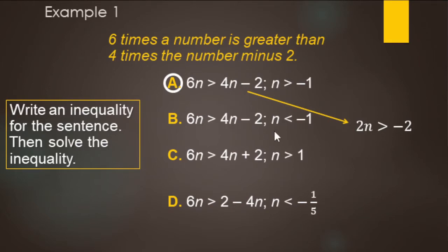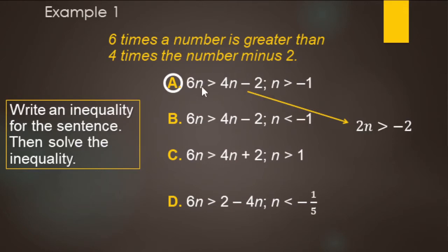On multiple choice math questions, you can take shortcuts by looking at the answers. Looking at all four inequalities, the solutions narrow down to either greater than or less than negative one. You don't actually have to solve — just try a number. Pick zero, which is bigger than negative one, and test it: zero greater than zero minus two is negative two. Zero greater than negative two — yes, that's true. So the answer is A. It's okay to work backwards a little and use your brain.